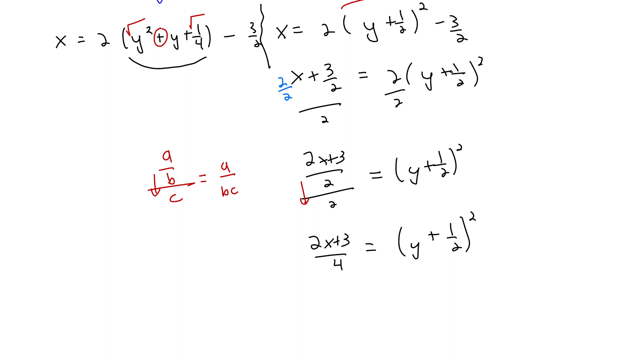This gives us 2x plus 3 all over 4 equals y plus 1 half quantity squared. And now we're solving for y here. So we'll take the square root of both sides to get rid of the squared. And remember, we add on a plus or minus when we take the square root of both sides.